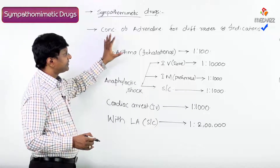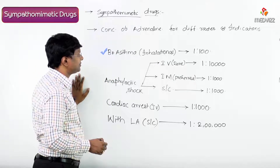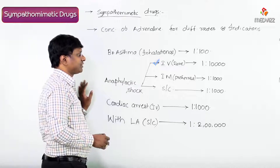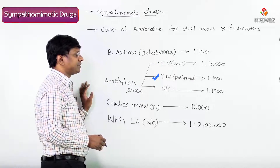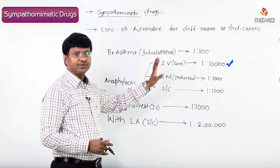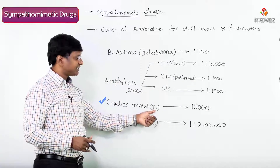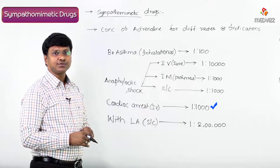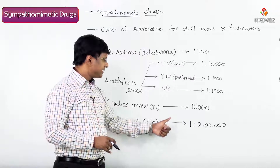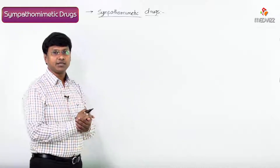To summarize: for bronchial asthma via inhalation, the concentration is 1:200. For anaphylactic shock, intramuscular and subcutaneous routes use 1:1000, while the rarely-used intravenous route uses 1:10,000. For cardiac arrest, the intravenous route uses 1:1000. With local anesthetics, adrenaline is given subcutaneously at 1:200,000.